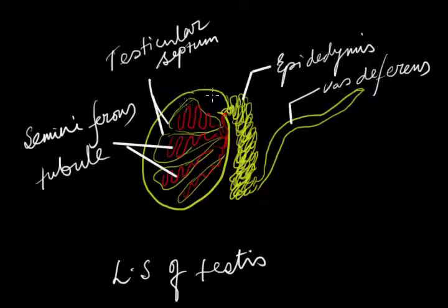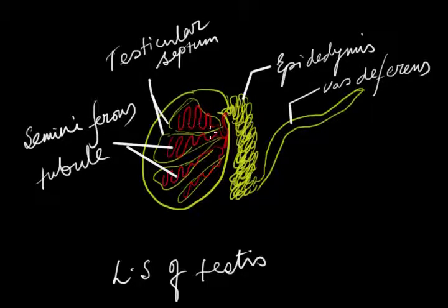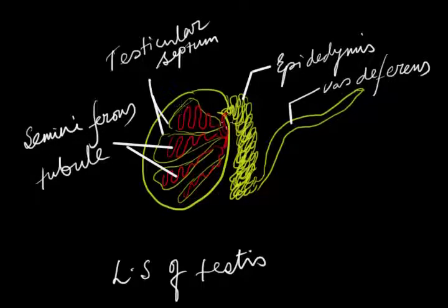This is the outer membrane of testes. It is a somewhat white-shaped structure composed of several compartments. These compartments are made by a septum-like structure known as the testicular septum, which forms 12 to 15 compartment-like structures within the testes.